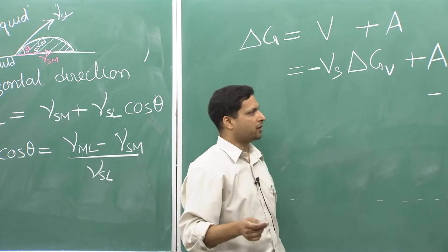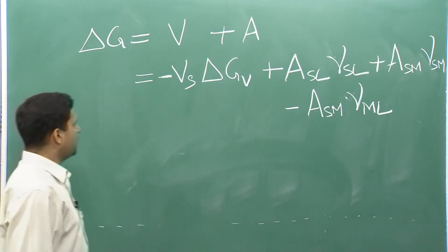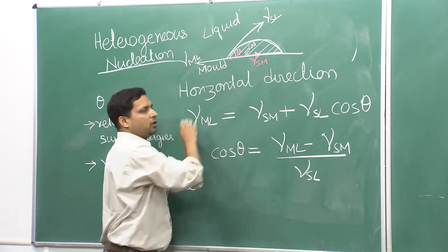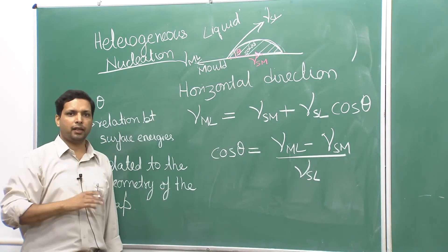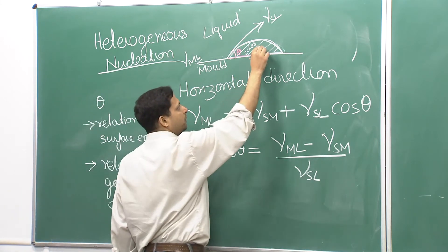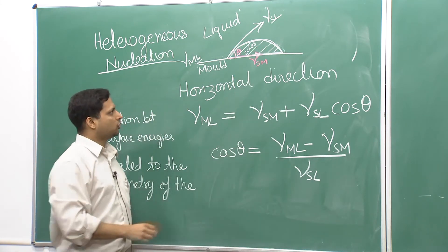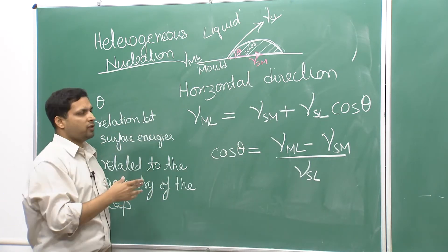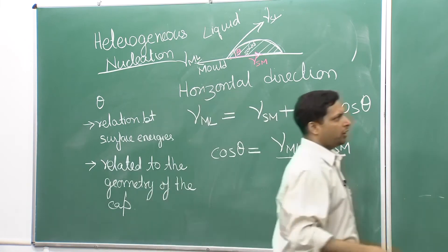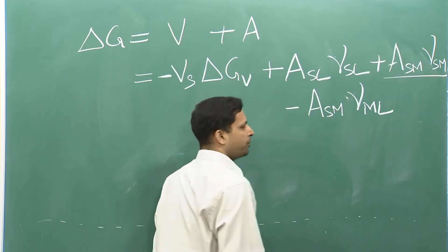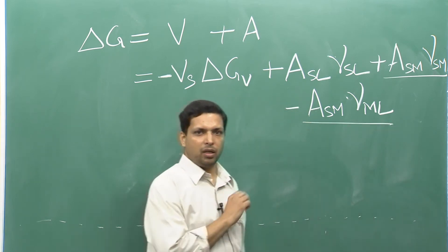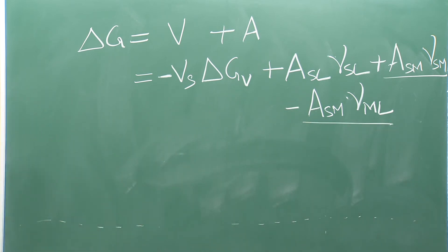A_SM is the area that was earlier occupied by the mold-liquid interface but is now occupied by the solid-mold interface. A new interface A_SM × γ_SM has been created, while the old interface A_SM × γ_ML has been removed. That is how all these terms arise.